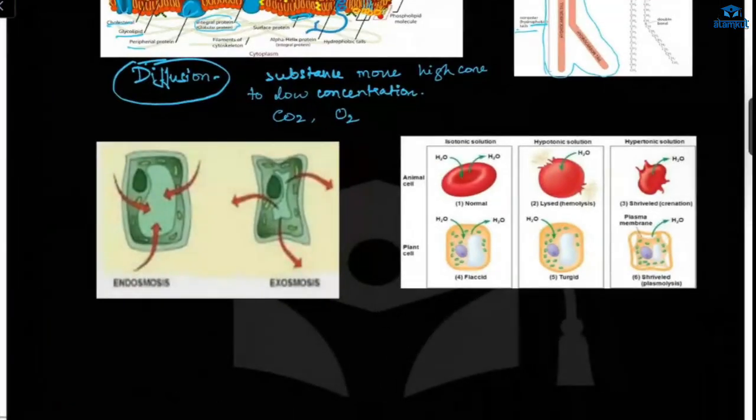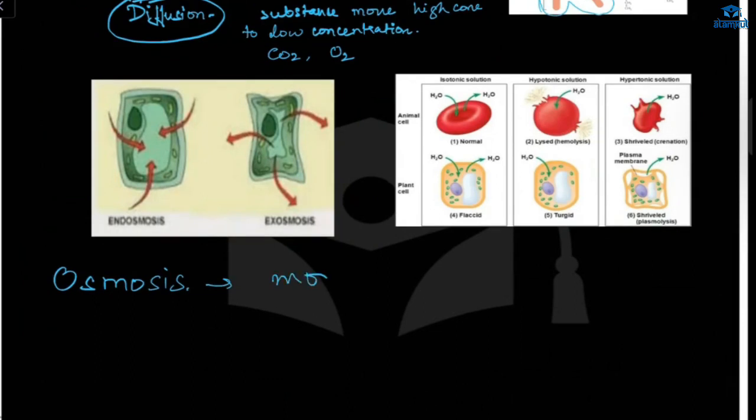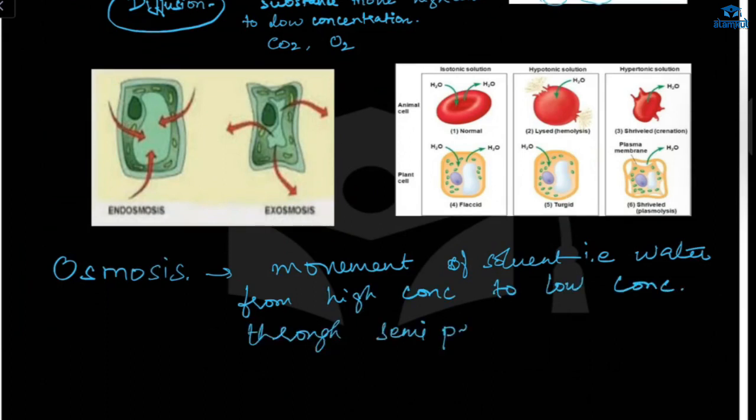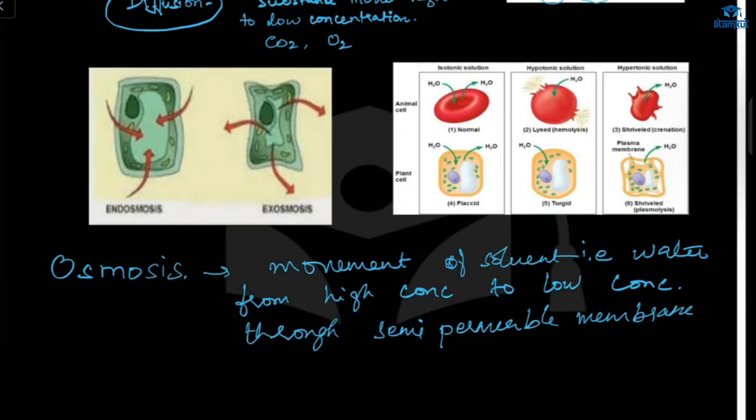Next is osmosis. This is movement of solvent, which is water, from high concentration to low concentration through semi-permeable membrane. Now there are two types of osmosis: endosmosis and exosmosis. In endosmosis, water from outside will get inside the cell because the cell is having lower concentration of water. So high concentration to low concentration. This is endosmosis because water is getting inside the cell.